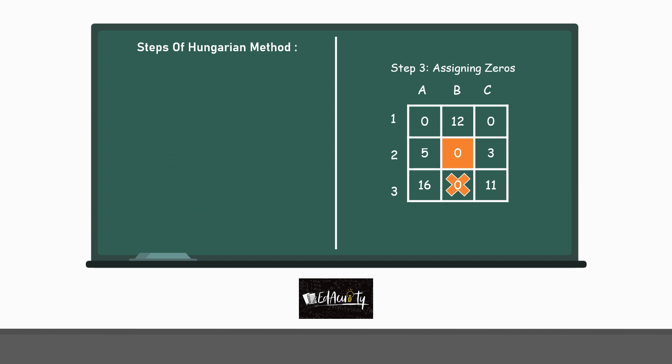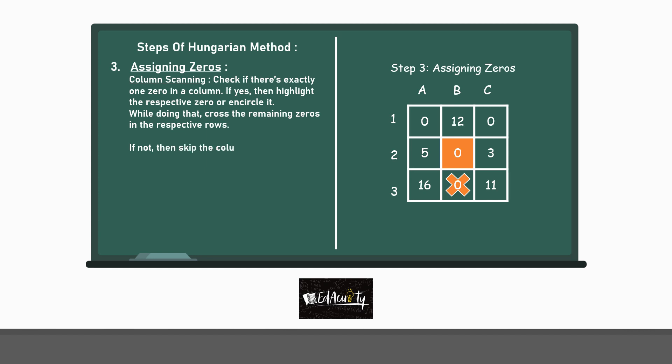Now, even after scanning every row, if all the 0s are still not covered, we need to do a column scan. Column scan. Check if there is exactly one 0 in a column. If yes, then highlight the respective 0 or encircle it. While doing that, cross the remaining 0s in the respective rows. If not, then skip the column and switch on to the next column. See that in column A, there is only one 0. Highlight it and cross the 0 in the corresponding row, i.e. row 1.